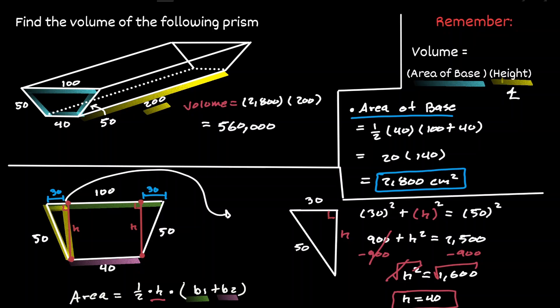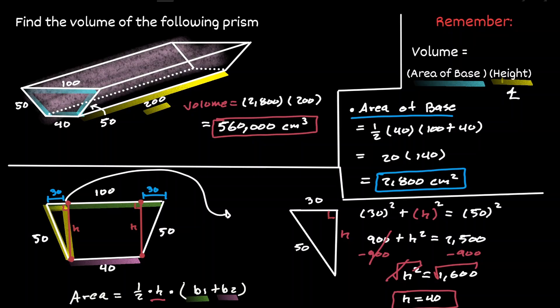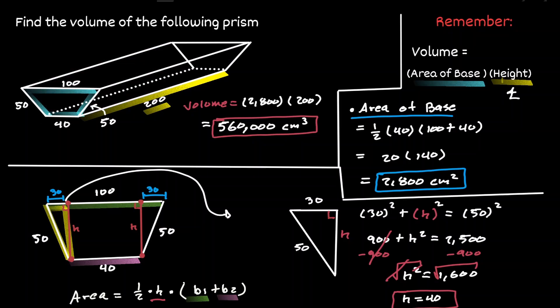When it comes to volume, the units we use are not centimeters squared, but centimeters cubed. So we have found the volume inside this prism to be 560,000 centimeters cubed. Just to clarify, this assumes all measurements are given in centimeters.